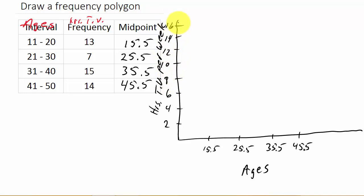And then we just plot the points. So the way that we plot the points, our points would be in the form, the midpoint would be like our x-coordinate, and the frequency would be like our y-coordinate. Okay. So for instance, the first point, we would plot the point 15.5, 13.